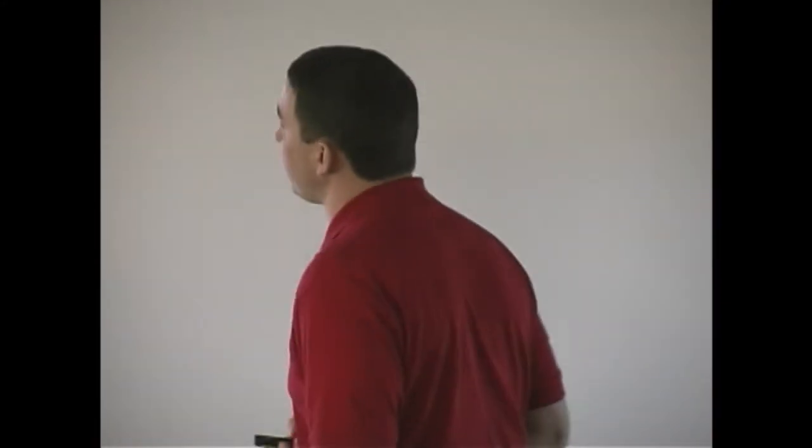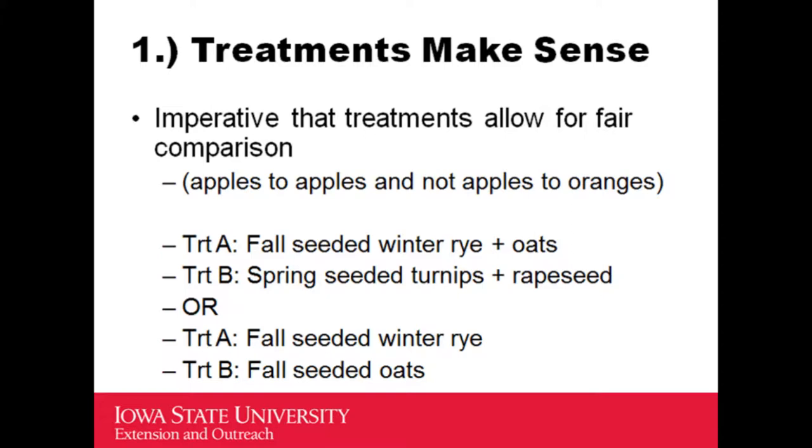So what we decided to do was basically try to get everyone on the same page on some of the minimum things we need to be thinking about. The yellow sheet coming around is so you can doodle on it or take notes. What I did is I came up with ten considerations we should be thinking about as we design on-farm trials. I'll walk through those, do a couple scenarios, and then we'll see where the clock is.